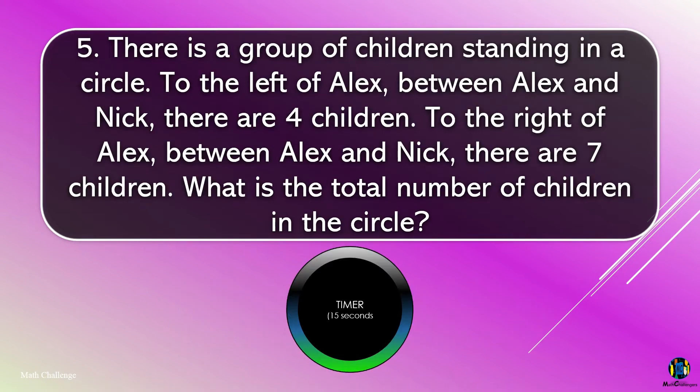Question 5. There is a group of children standing in a circle. To the left of Alex, between Alex and Nick, there are four children. To the right of Alex, between Alex and Nick, there are seven children. What is the total number of children in the circle?